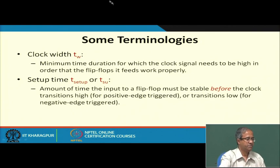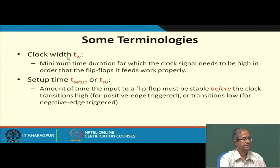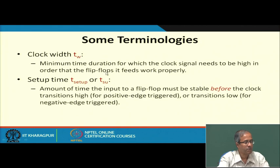Some of the terminologies were introduced earlier in the last lecture, but let me reintroduce them again. We sometimes talk about the clock width. Clock width is not equal to the clock period — clock width means for how long the clock remains high. It is the time period for which the clock remains high. Some flip-flops may have a minimum time requirement for this: a minimum duration for which the clock signal needs to be high in order for the flip-flop to work properly.